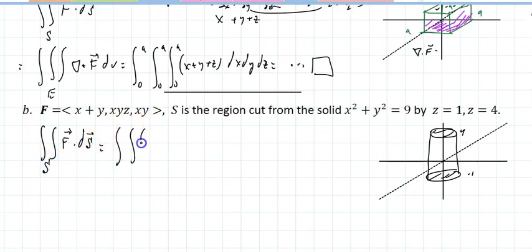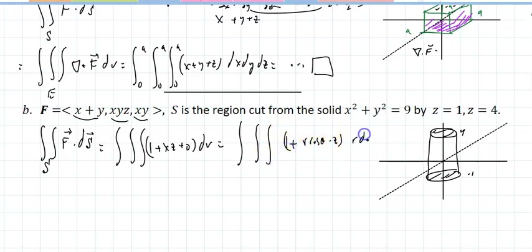That's going to be the triple integral. The partial with respect to X is 1, partial with respect to Y is XZ, partial with respect to Z is 0. Right? DV, which is the integral. If I run this accurately, I'm going to do 1 plus R cosine theta times Z, R dZ R dR dtheta. Z runs from negative 1 to 4, theta runs from 0 to 2 pi, and R runs from 0 to 3.